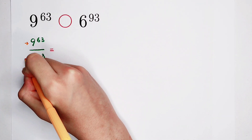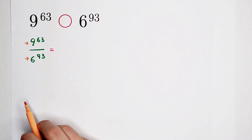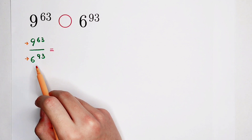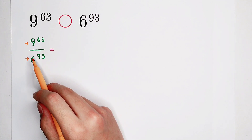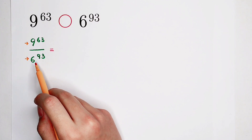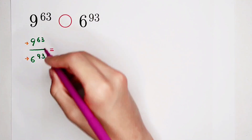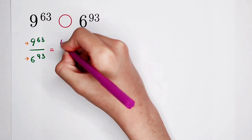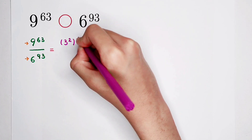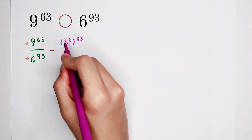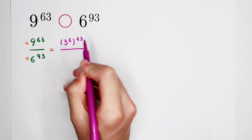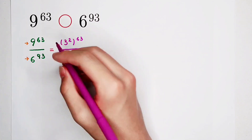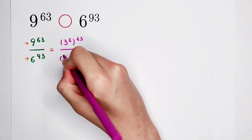If you take a look at the bases, 9 and 6 — they are also divisible by 3. So I can write 9 as 3 times 3, or 3 squared, and 6 as 3 times 2. So 9 is 3 squared. You can also write it as 3 times 3 — it's up to you. Divided by 6 to the power of 93. And 6 is 3 times 2, to the power of 93.